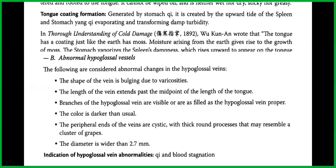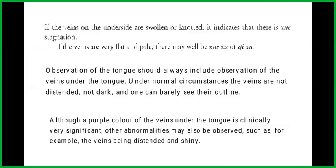Indication of hypoglossal vein abnormalities is chi and blood stagnation. If the veins on the underside are swollen or knotted, it indicates blood stagnation. If the veins are flat and pale, there may well be blood deficiency or chi deficiency.